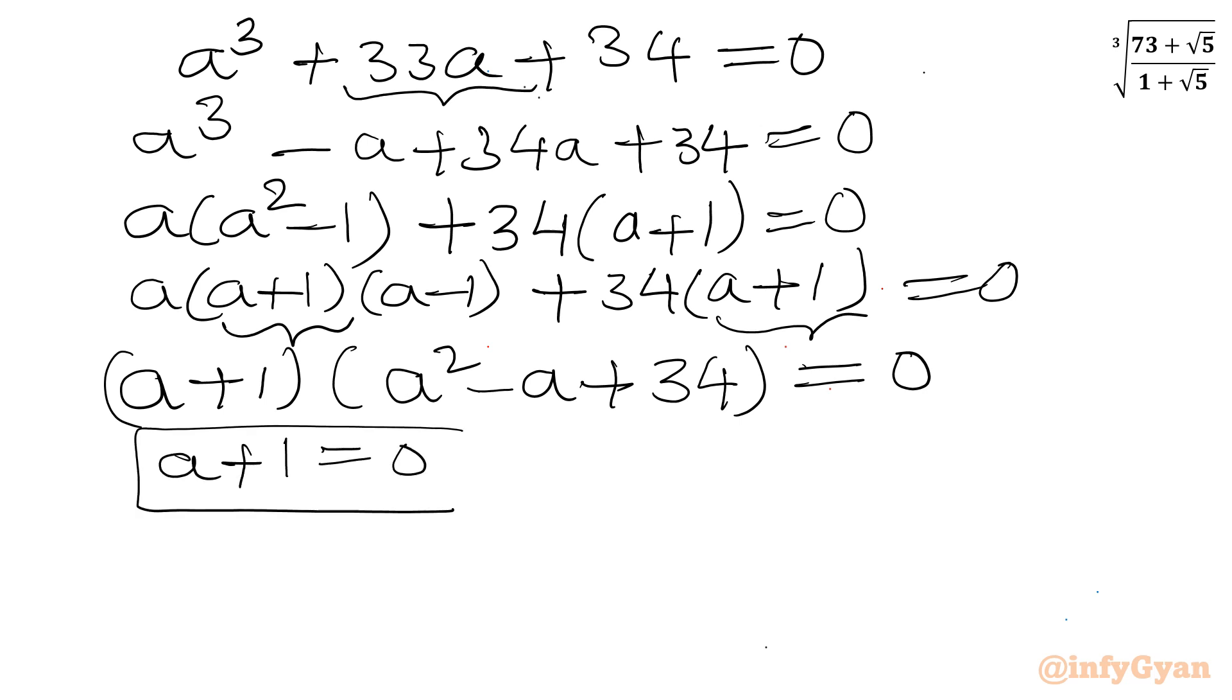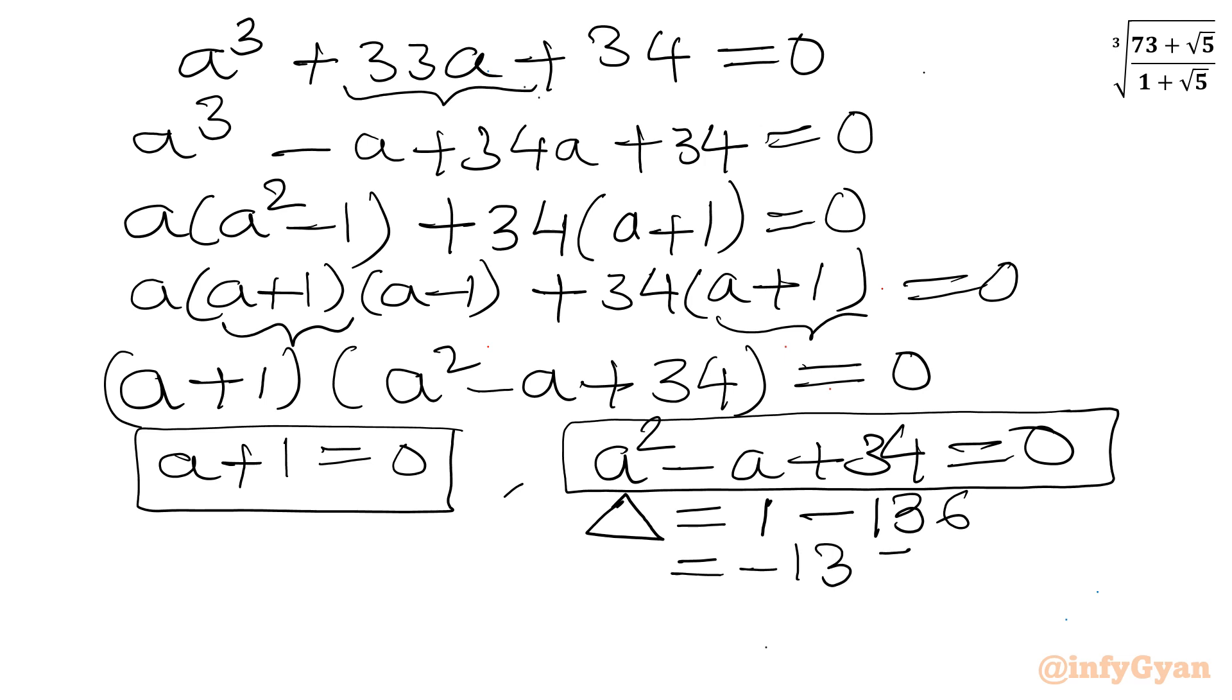or a square minus a plus 34 will be equal to 0. So if I will check only the discriminant for this quadratic equation, then I can write b square minus 4ac value. Minus 1 square is 1, minus 4 times 1 times 34, which is 136. So this value is negative 135. So we will get complex solutions. So we will reject this quadratic equation. And from first equation, I can conclude a will be negative 1.